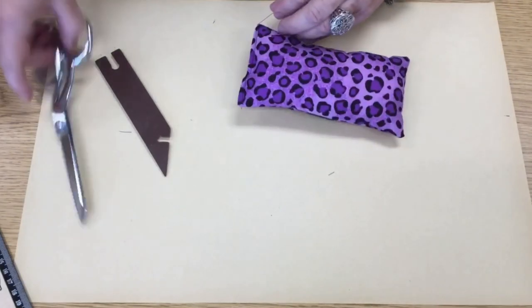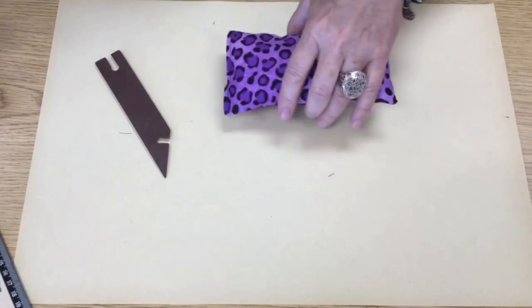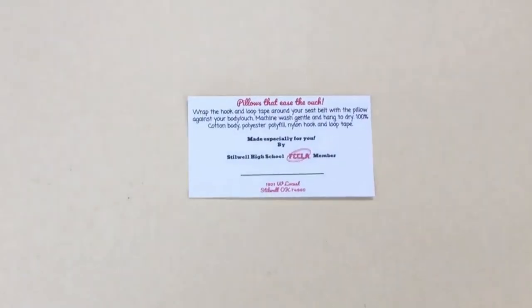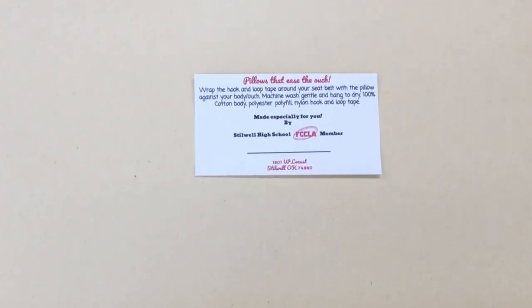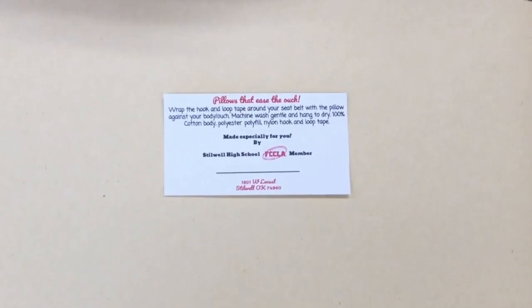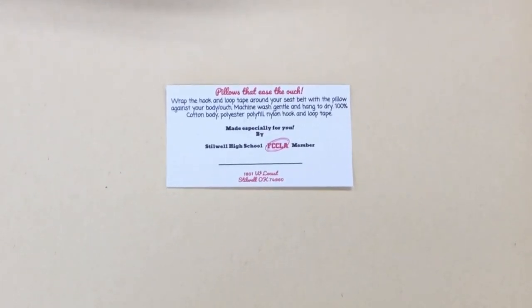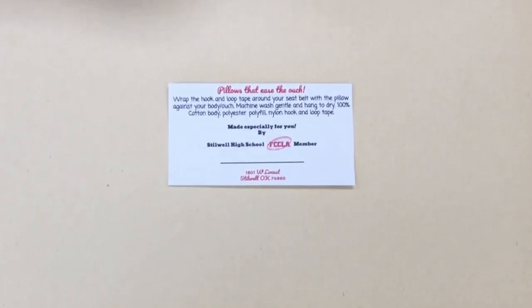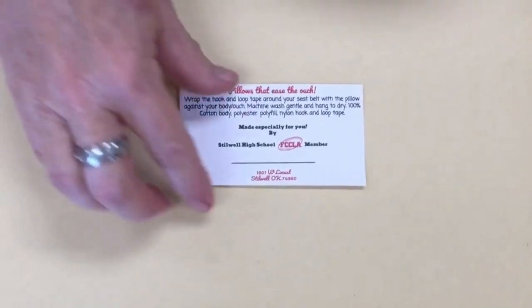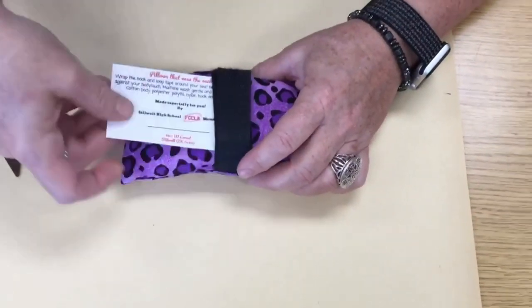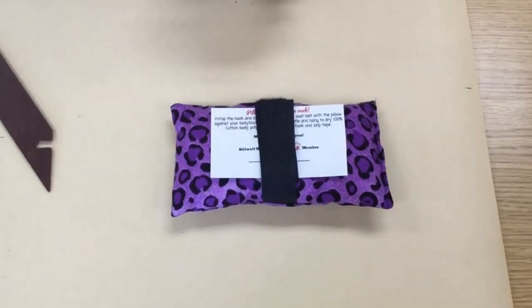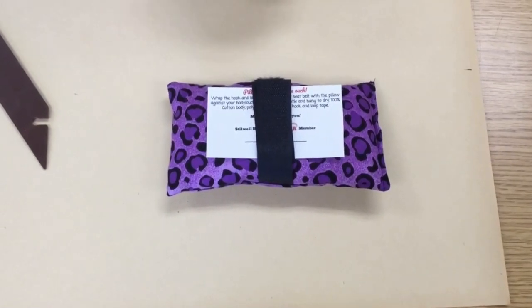And the finishing touch after you trim all the strings are finished. We made these little cards and we're going to place them in the pillow. And the card reads pillows that ease the ouch wrap the hook and loop tape around your seat belt with the pillow against your body. Machine wash gentle hang to dry 100% cotton body, polyester polyfill, nylon hook and loop tape especially made for you by Stillwell High School member. And the member has their option to sign that and we'll slip it in the pillow and this will be donated to a cancer treatment center near us. We hope you join us in making a difference in your community by getting your chapter involved with this great project.